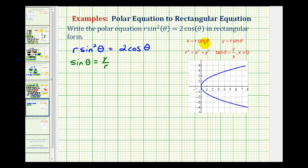And if x equals r cosine theta, it's also true that cosine theta is equal to x over r. Let's perform these two substitutions first.